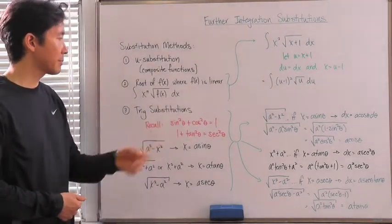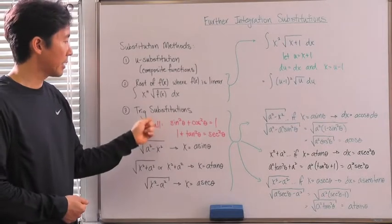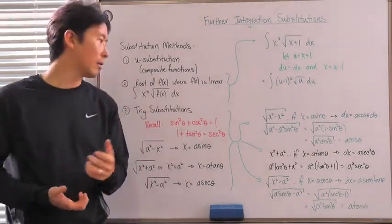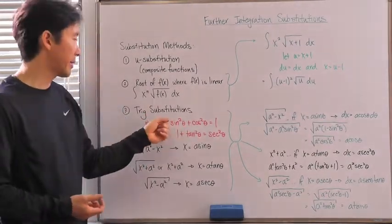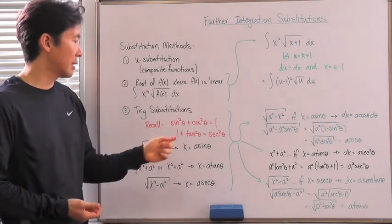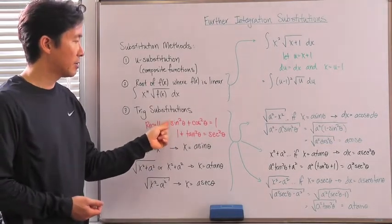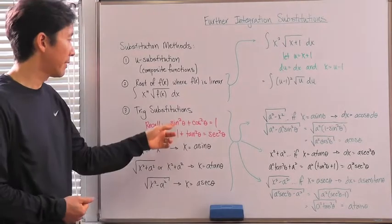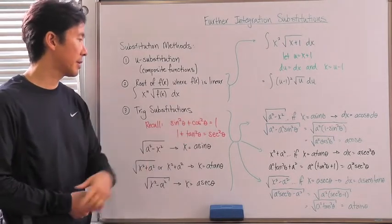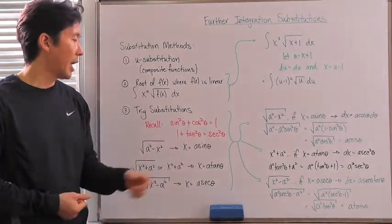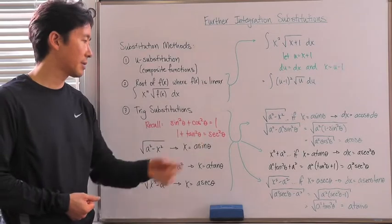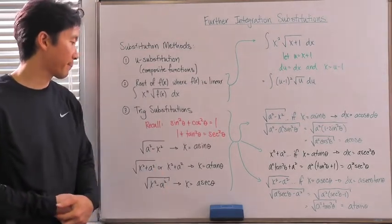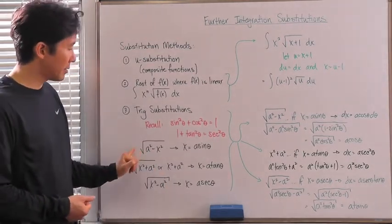Now let's take a look at trig substitutions. The one thing we need to recall is our Pythagorean trigonometric identities. The two primary ones are: sin²θ + cos²θ = 1, and 1 + tan²θ = sec²θ.